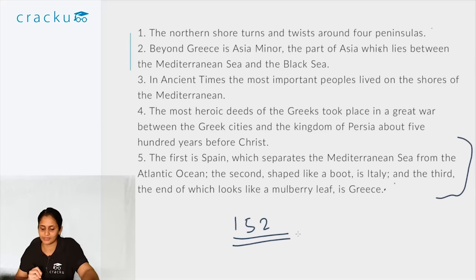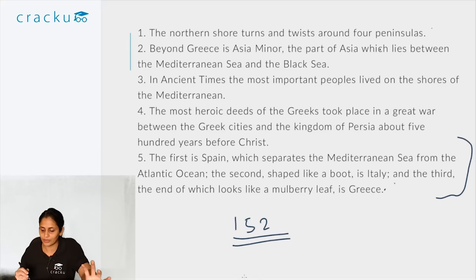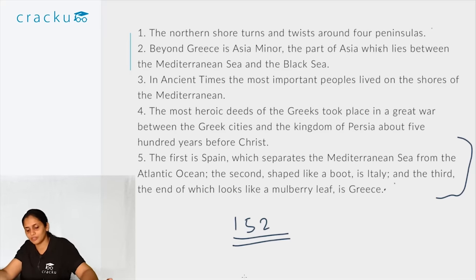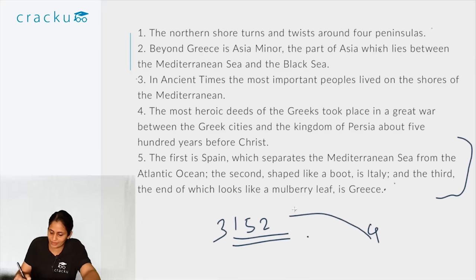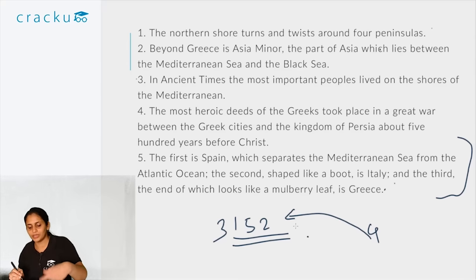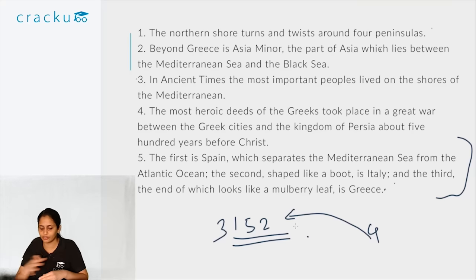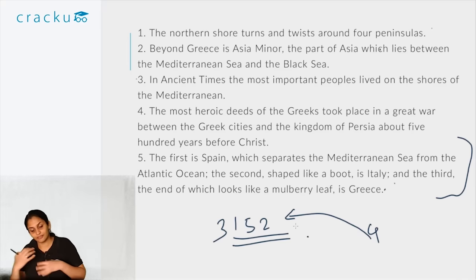So it's between sentences 3 and 4 for the odd one out. Sentences 1, 5, and 2 describe the geography of the Mediterranean's northern shore. Sentence 3, talking about the most important peoples along the Mediterranean shores, is in line with this geography theme and would be a good context-building introduction. Sentence 4, about the heroic deeds of the Greeks in a war with Persia, is completely unrelated to the geography being described in the rest of the paragraph. Therefore, sentence 4 is the odd one out.